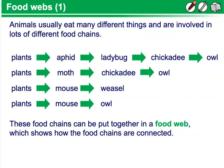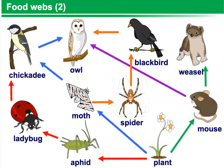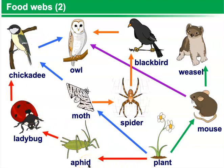Reliance on only one source of food would make an organism vulnerable to variations in the availability of that food. Also, many food sources are not available all year round, so alternative sources of nutrition are needed. In the food web shown here, the mouse eats the plant and can be eaten by the weasel, whereas the plant may be eaten by the moth and then the moth by the chickadee, or the plant, aphid, and ladybug are all dependent upon each other. Each different coloration is showing those individual food chains.